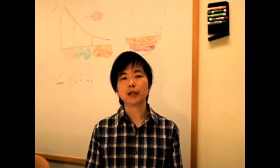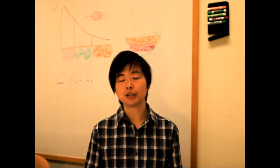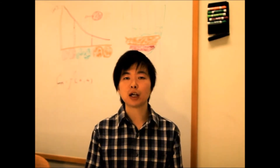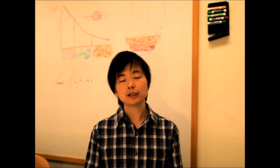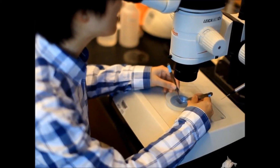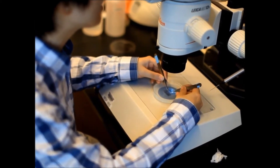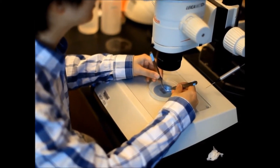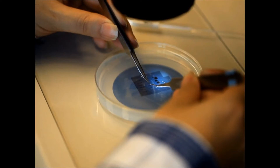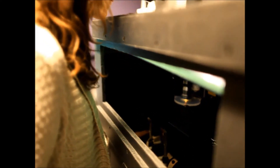Our hope was to be able to follow single neuron progenitors as they move around and become specified. This is a very challenging task because during this time the embryo undergoes drastic morphological changes, making continuous imaging on the same cells very difficult.